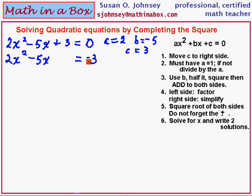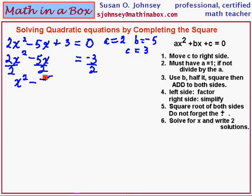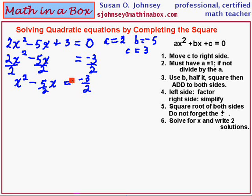The second step: we must have a equal to 1, but our a for this problem is 2. If it's not a 1, then we have to divide all terms by 2. So 2 divided into each term: 2 divided by 2 is 1, so we do have 1x squared now, but our b becomes negative 5 halves x equals negative 3 halves. These fractions do not reduce, but sometimes they will.